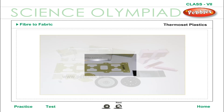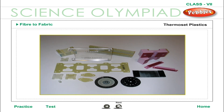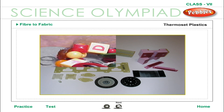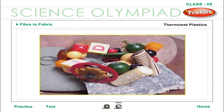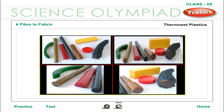Thermosetting plastics: there are some plastics which, when molded once, cannot be softened by heating. These are called thermosetting plastics. Two examples are bakelite and melamine. Bakelite is a poor conductor of heat and electricity. It is used for making electrical switches, handles of various utensils, etc.